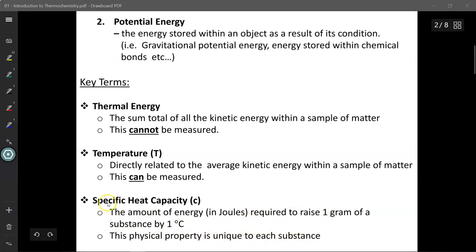So for instance, water has a very high specific heat capacity, about 4.18 joules per gram degree Celsius. Meaning that if I want to raise one gram of water by one degree Celsius, it would require 4.18 joules of energy to do so.